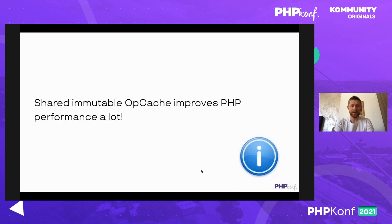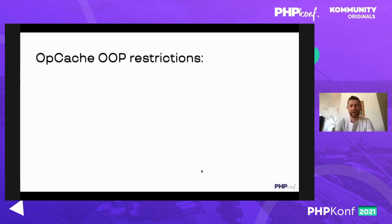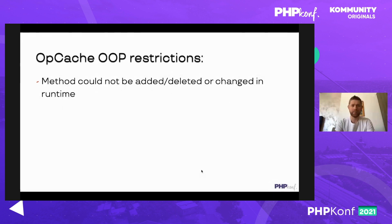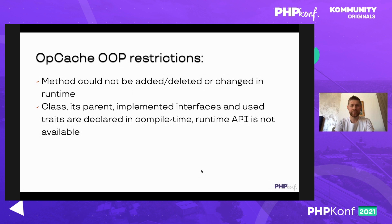Immutable op cache improves PHP performance a lot because we don't need to parse structures everywhere or analyze source code — we can just use op cache from shared memory and execute it. But at the same time we have restrictions: we cannot simply change our class by removing or adding methods. In some languages, even in JavaScript, it's possible to dynamically add methods to a class via prototype links. We also cannot change inheritance at all — no parent class can be replaced, no interfaces can be added or changed in runtime, and traits declared at compile time cannot be changed in runtime.